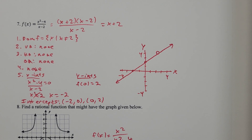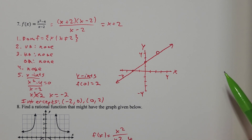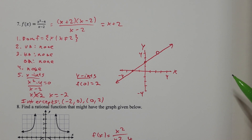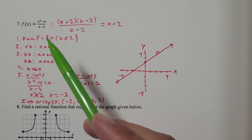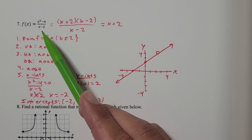We'll do some more in section 3.7. In problem 7, we have f of x equals x squared minus 4 divided by x minus 2. We'll go through the six-step procedure to sketch the graph of f. Step 1 is to get the domain of f. The domain of f is all real numbers except for 2, because I can't divide by 0.